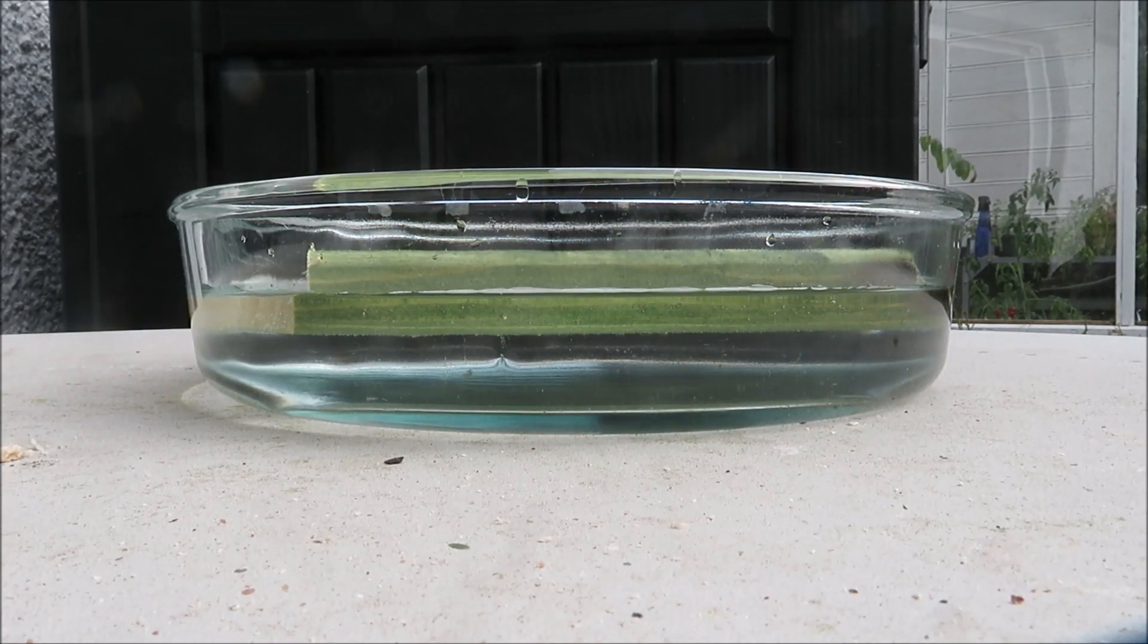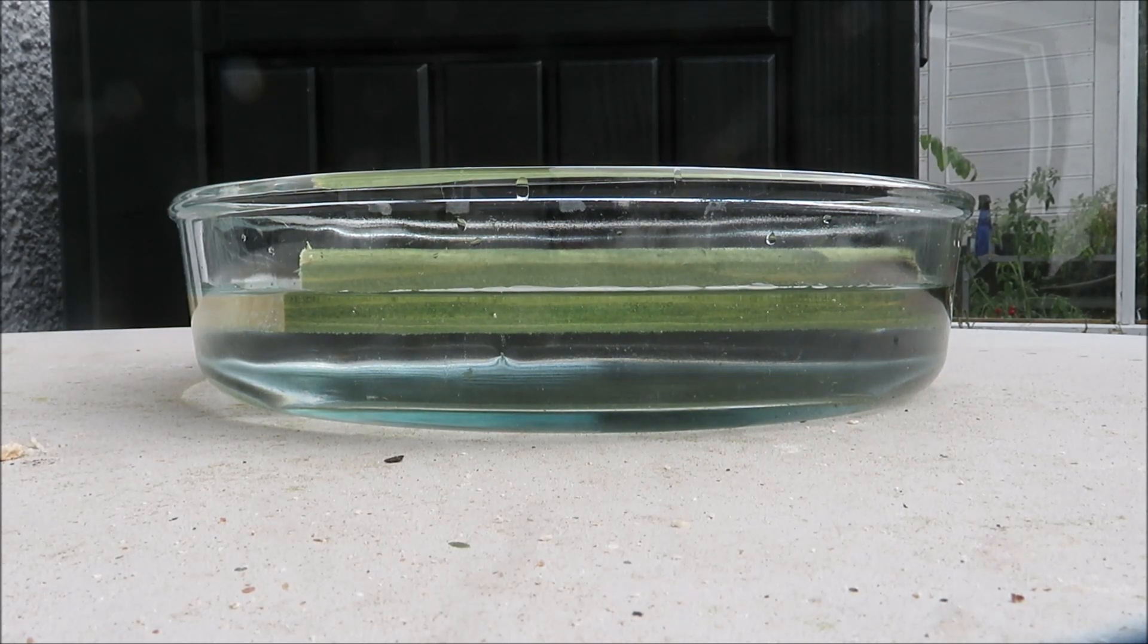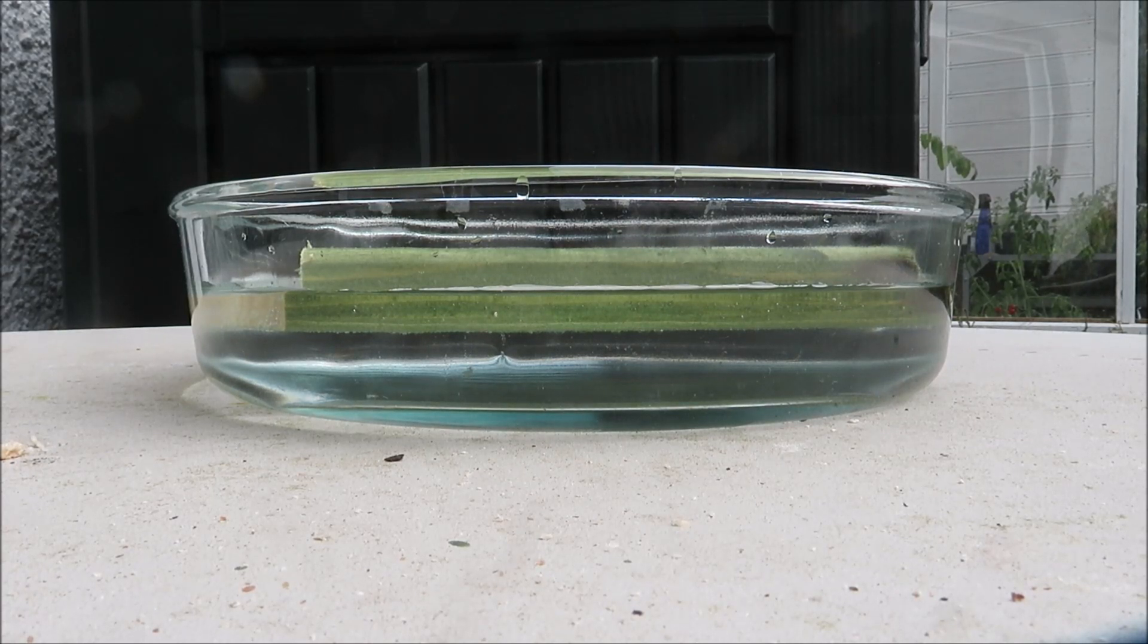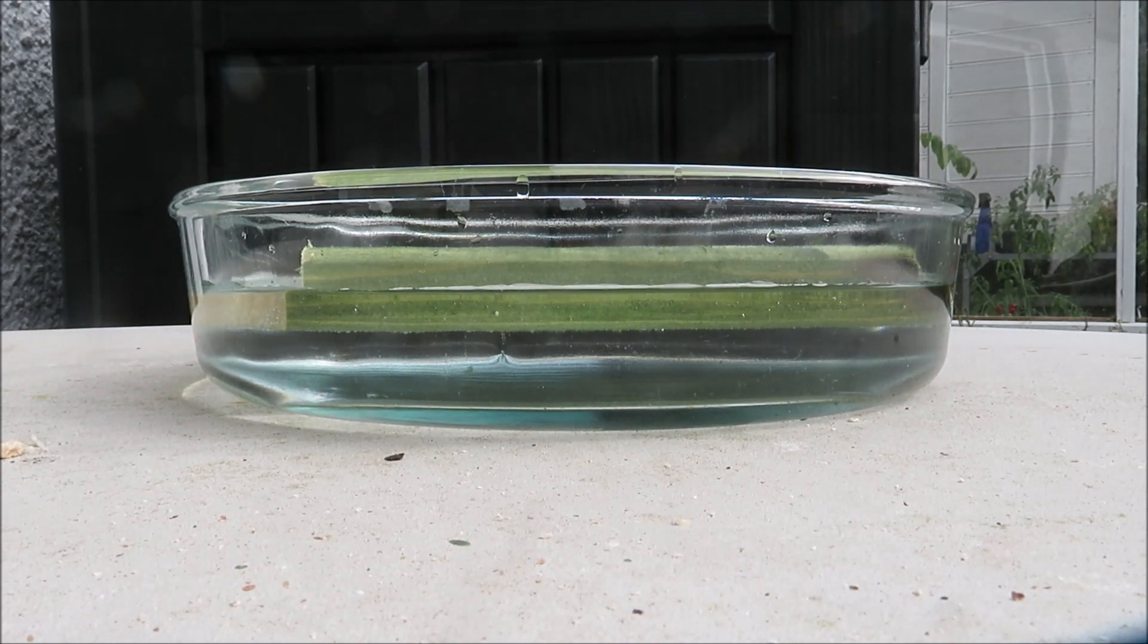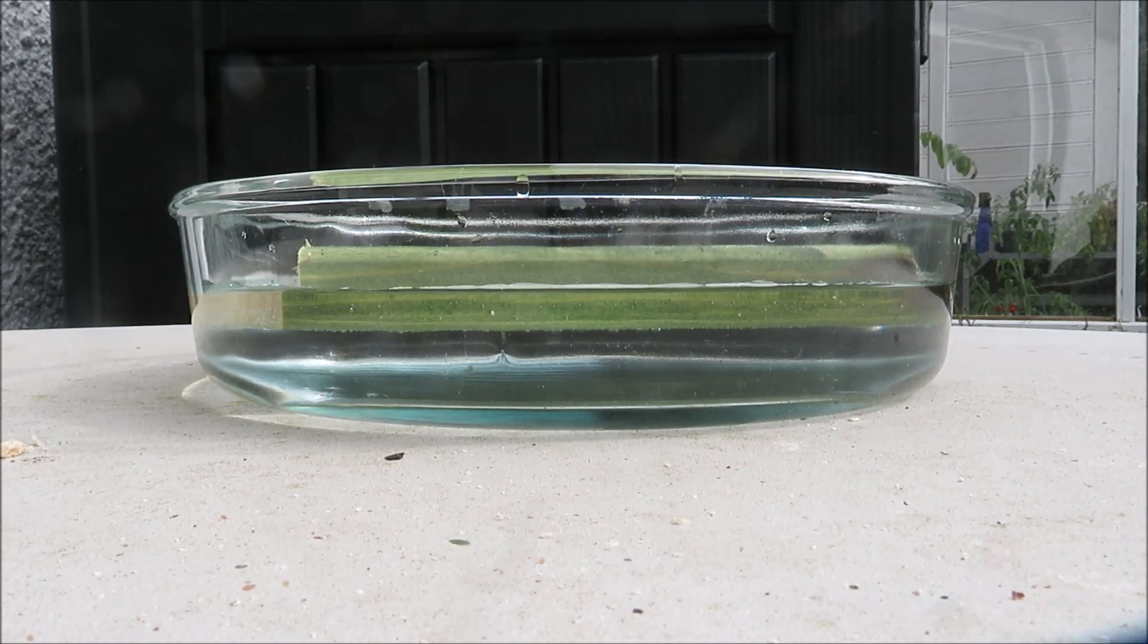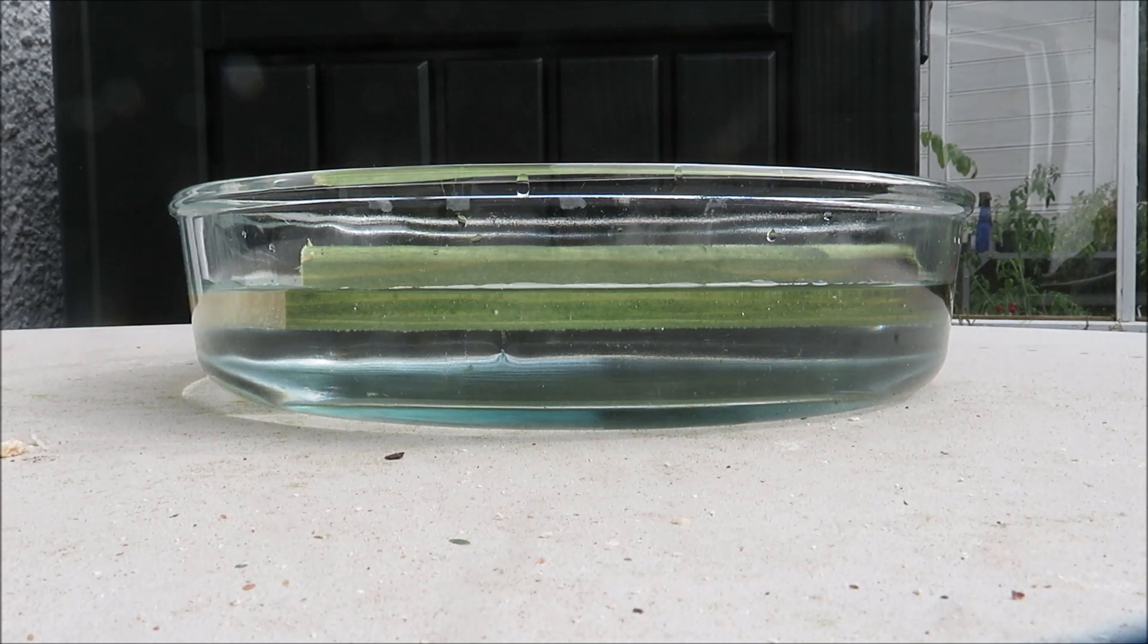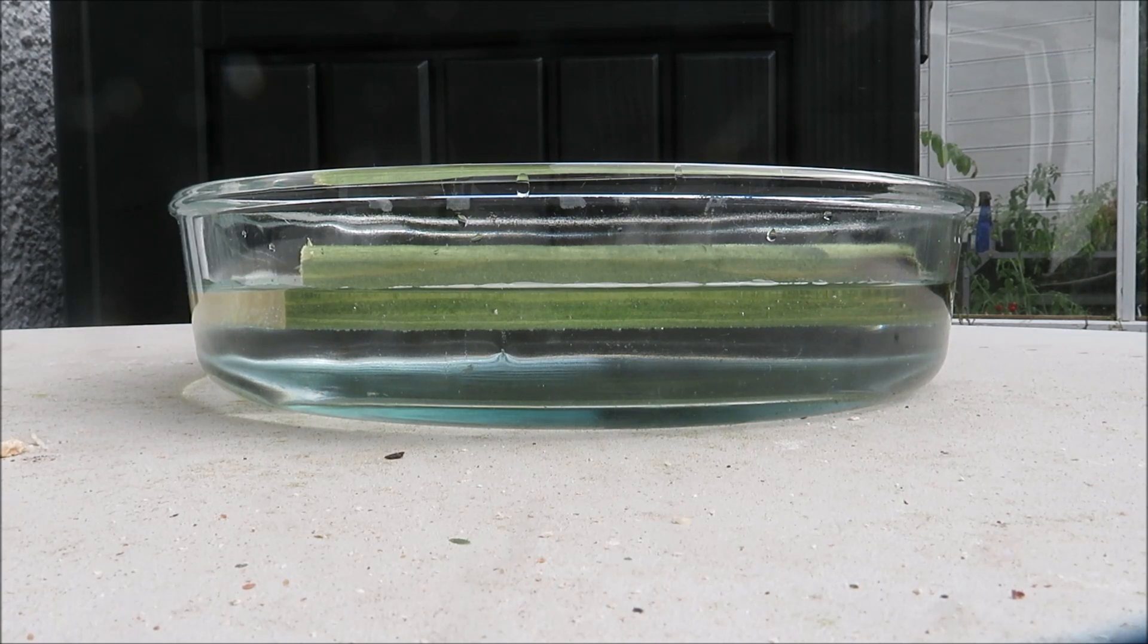It doesn't sit on the surface of the water. Even though if we were to calculate the density of the wood and the density of the water, the wood is less dense than the water. But it actually partially submerges, which is quite interesting. And requires an explanation from those that claim that density is the only factor that matters. If density was the only factor that mattered, why does this piece of wood sink a little bit into the water?